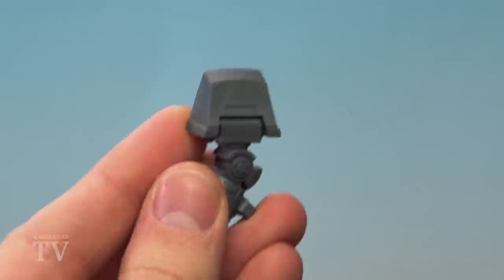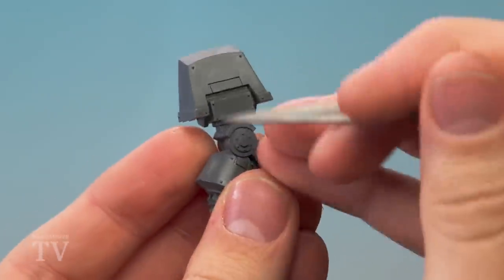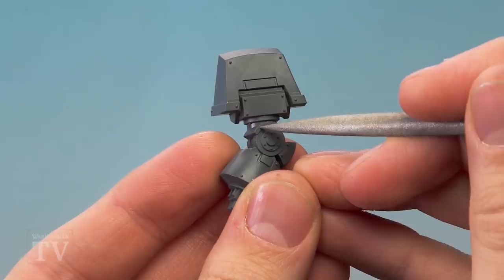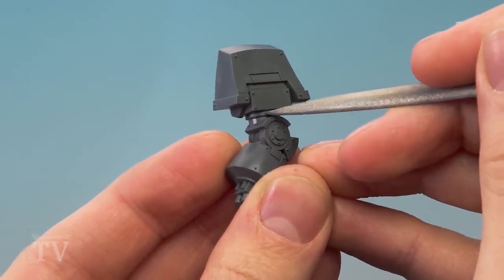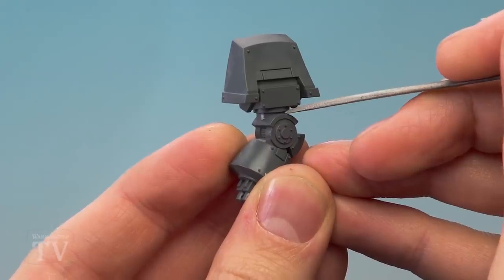We're going to remove the Power Fist from the shoulder first and cut in a very specific area. If I use my file here to show you, we'll cut just above this curved bit here but beneath this collar that's going around. So we're going to cut in there.